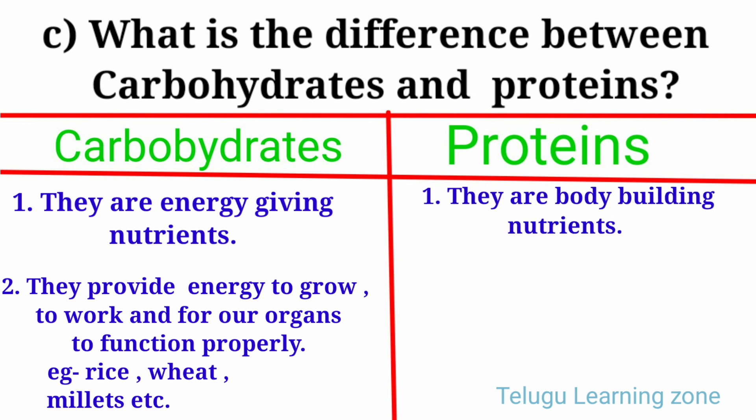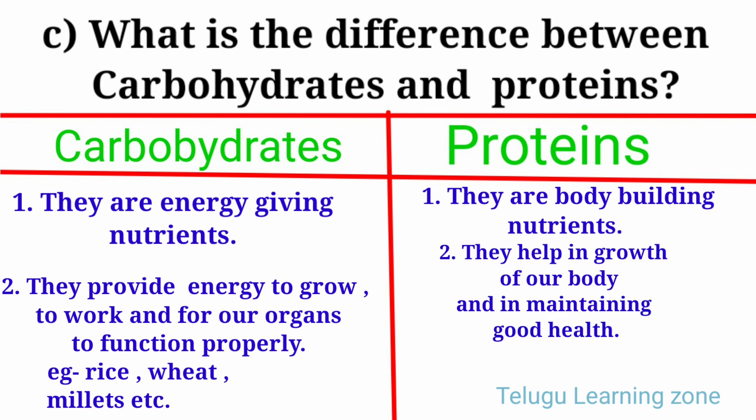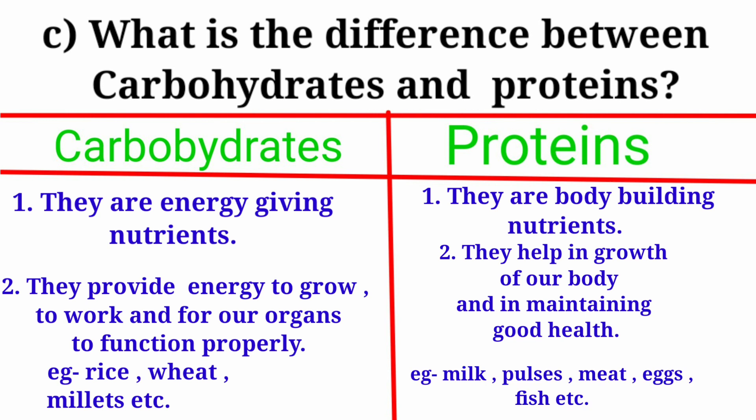Proteins: They are bodybuilding nutrients. They help in growth of our body and in maintaining good health. Examples: milk, pulses, meat, eggs, fish, etc.